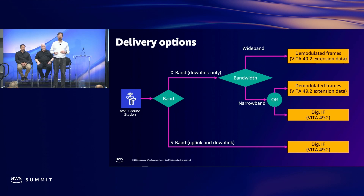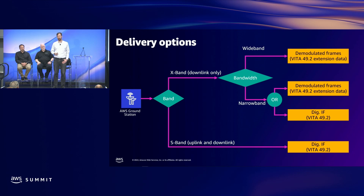There's a preview feature called Wideband DigIF. When that becomes generally available, you'll have a second option all the way up to the bandwidth limit to receive data in a digitized intermediate frequency representation — meaning that for wideband payload downlinks, you will also be able to bring your own SDR rather than using the radios available in AWS Ground Station.